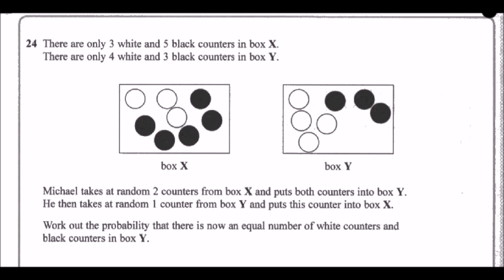The final question of the paper: there are 3 white and 5 black counters in box X, and 4 white and 3 black in box Y. Michael takes two random counters from box X and puts them in box Y, then takes one random counter from box Y and puts it back in box X. We need the probability that box Y ends up with equal numbers of white and black counters.